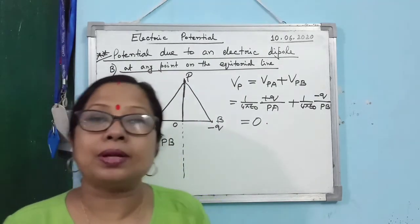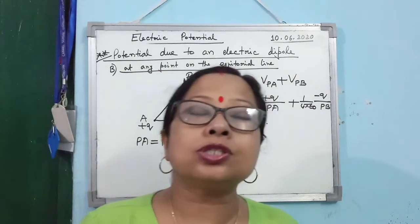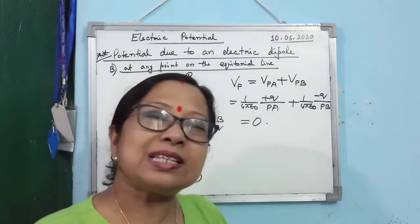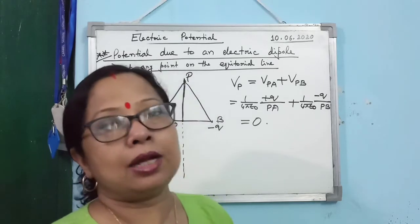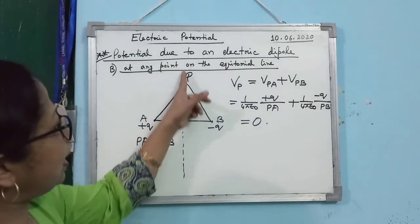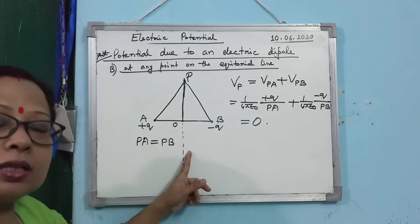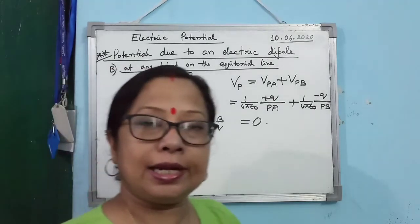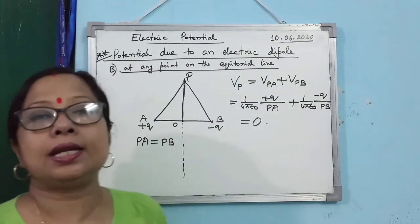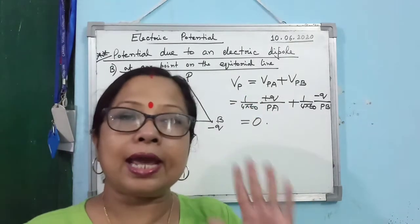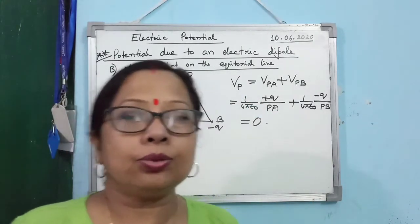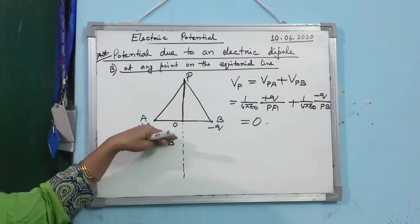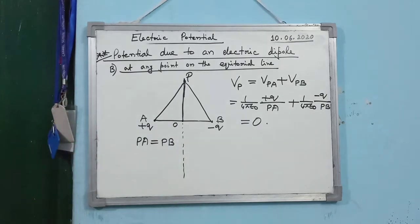This is a frequently asked 1 or 2 mark conceptual question in board exams: where is the potential zero due to an electric dipole? The answer is: potential is zero at every point on the equatorial line. The equatorial line is the locus of zero electric potential for an electric dipole.